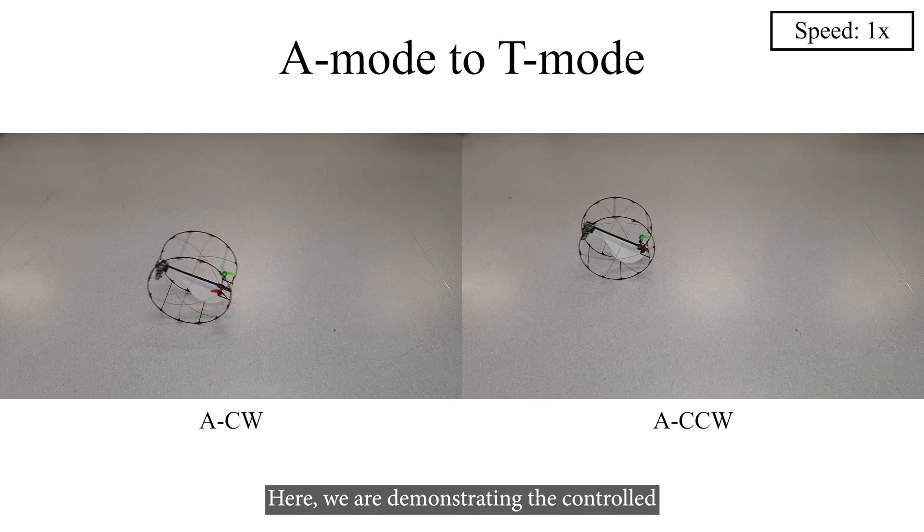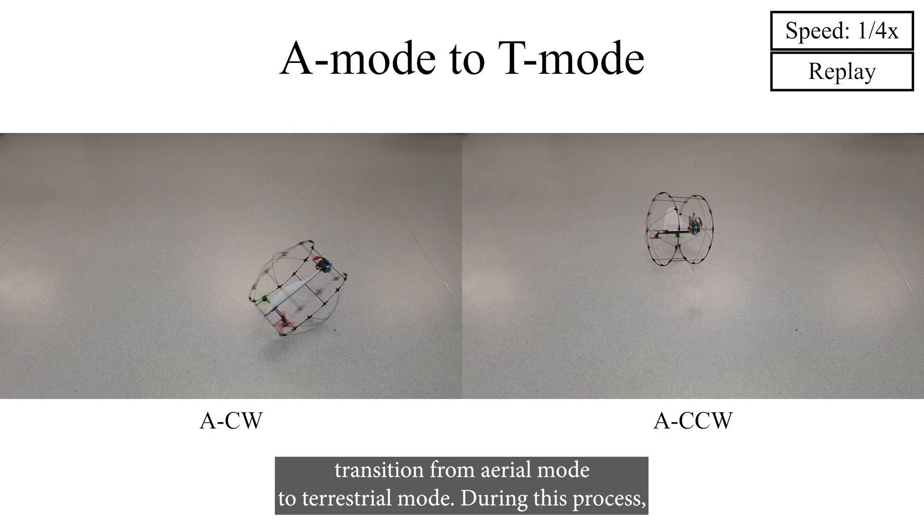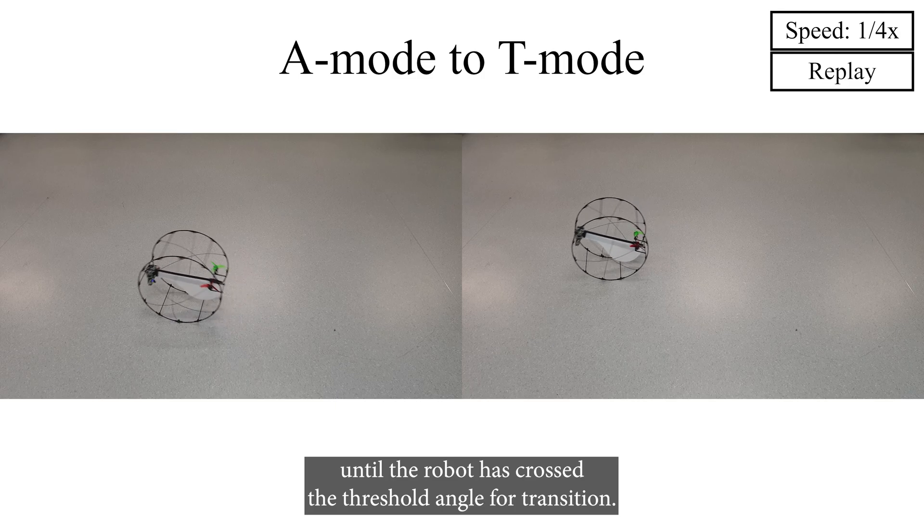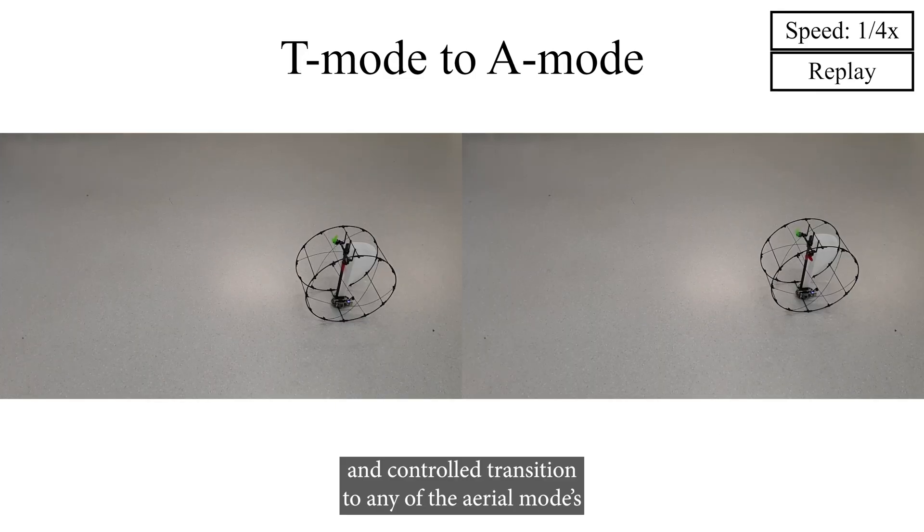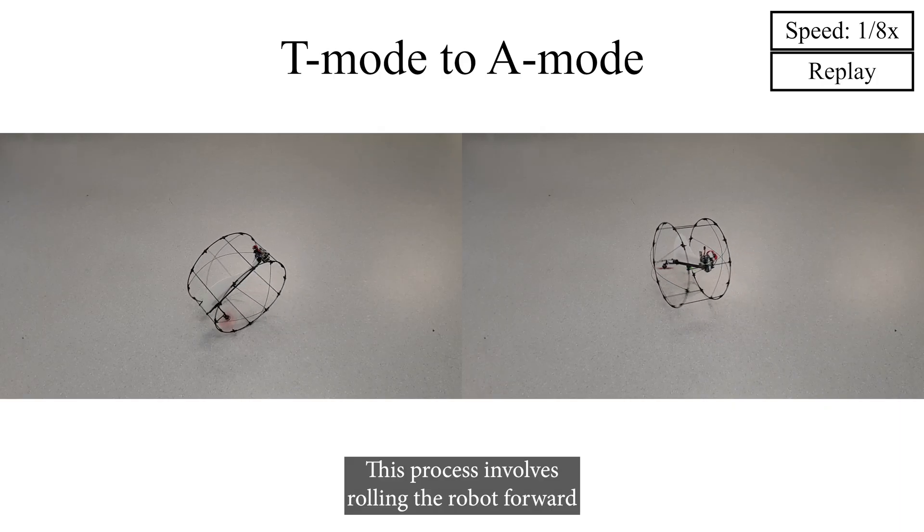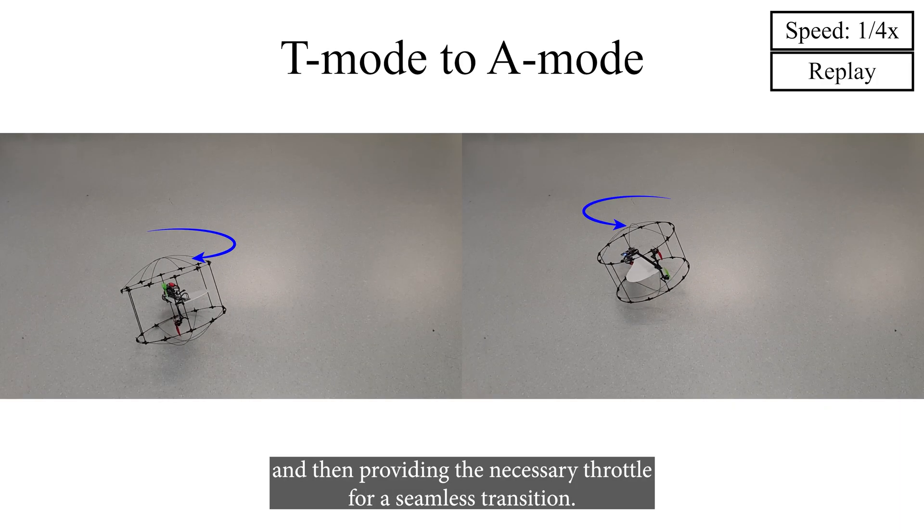Here, we are demonstrating the controlled transition from aerial mode to terrestrial mode. During this process, both motors provide throttle until the robot has crossed the threshold angle for transition. Adam can achieve a predetermined and controlled transition to any of the aerial mode passive states on the ground. This process involves rolling the robot forward and then providing the necessary throttle for a seamless transition.